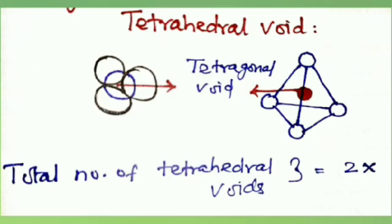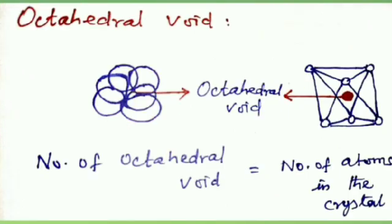Tetrahedral void: The three-dimensional empty space formed between three closely spaced spheres in one layer and another sphere in the next layer is called a tetrahedral void. There are two types of tetrahedral holes in closely packed crystals (HCP and CCP). The total number of tetrahedral voids containing x atoms in HCP or CCP crystal is equal to 2x.